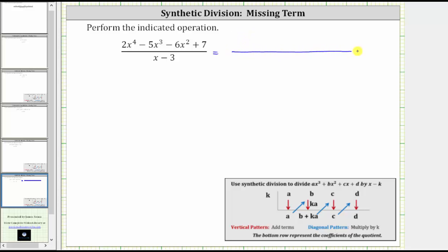Let's rewrite the dividend as two x to the fourth minus five x cubed minus six x squared plus zero x plus seven. When performing synthetic division, if there are any missing terms in descending order, we do want to include zero terms.